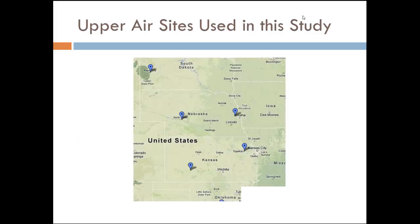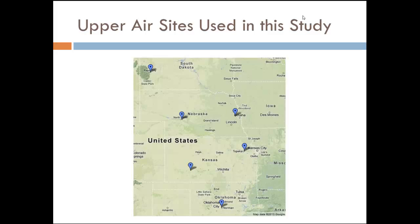The upper air sites I used were all in the central plains. The furthest north was Rapid City. Then also North Platte, Omaha, Topeka, Dodge City, and Norman as well. We're looking at that period from May 2nd to July 15th of 2012 at these six sites.